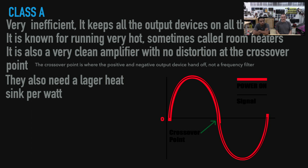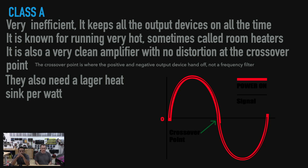Class A is very inefficient. It keeps all the output devices on all the time, meaning that if it draws 30 amps, it will always draw 30 amps — it never doesn't. It's always on 100%. It is known for running very hot; it's sometimes called a room heater. It is also a very clean amplifier with no distortion at the crossover point.